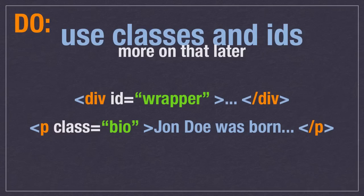The other things we want to use are classes and IDs — we'll talk more about those later. This is another way you can connect the two. There's never a way to completely separate HTML and CSS because CSS has to know a little bit about the HTML and vice versa. But classes and IDs are a nice way to just give things names, and then style them later in your CSS.